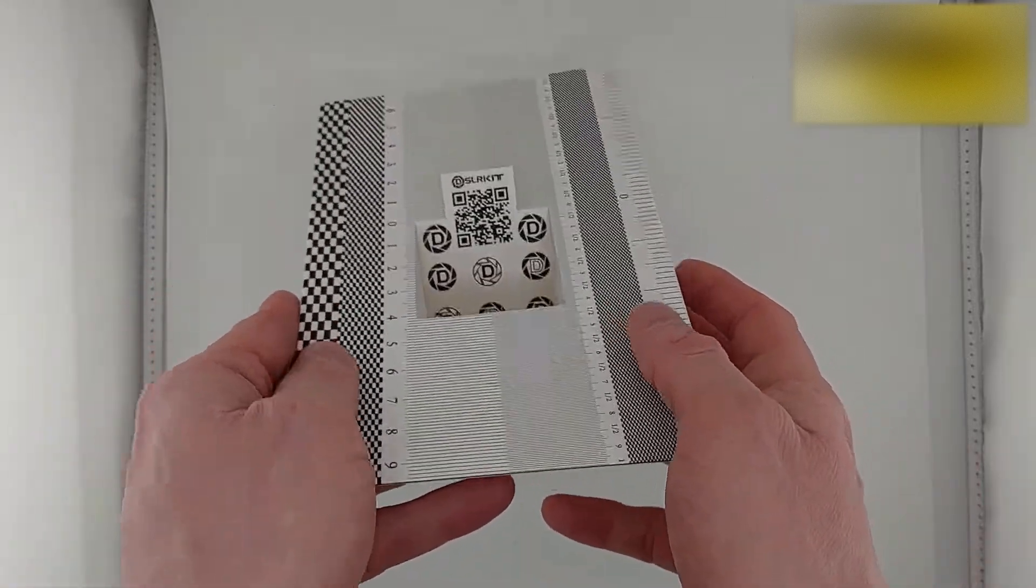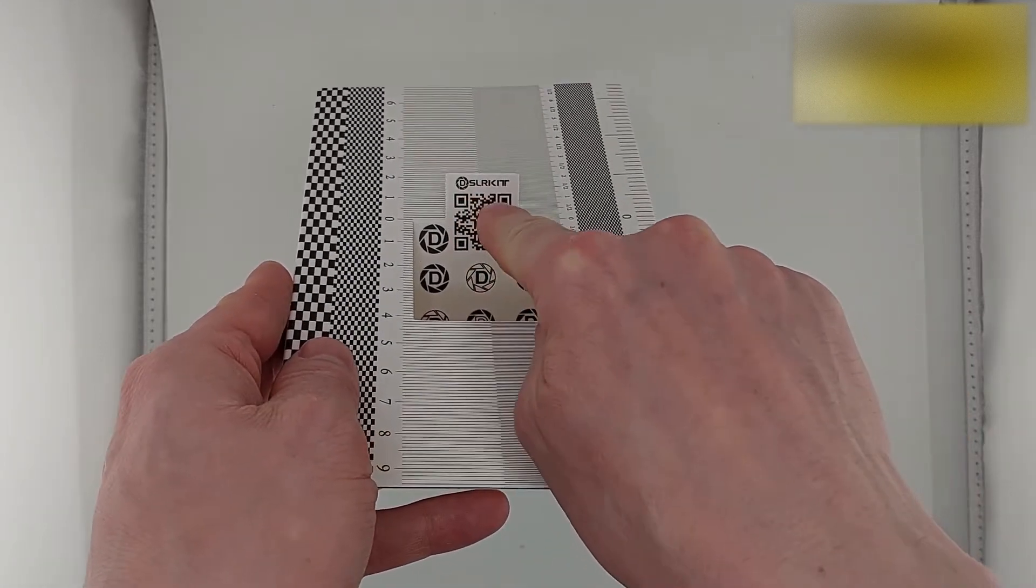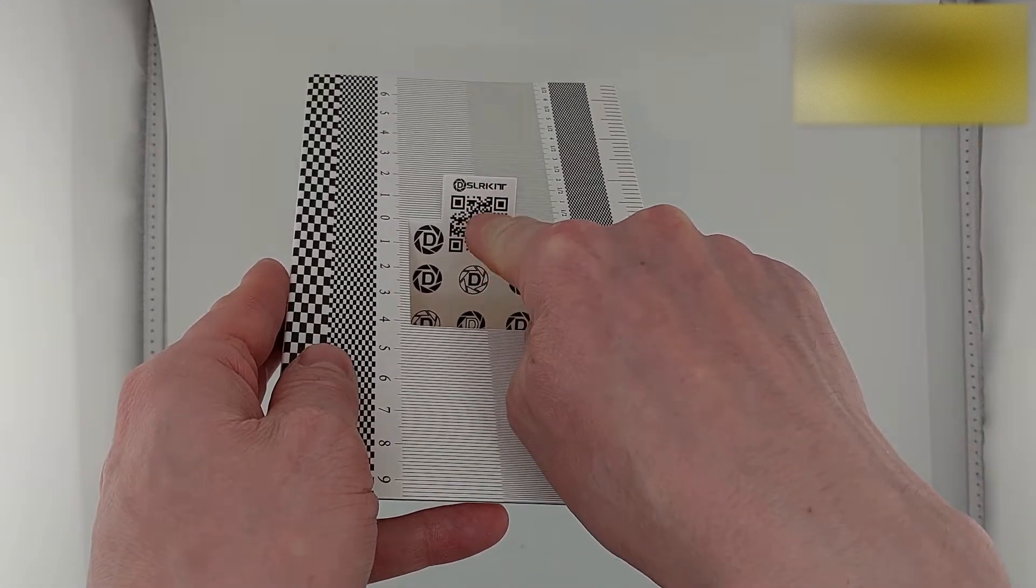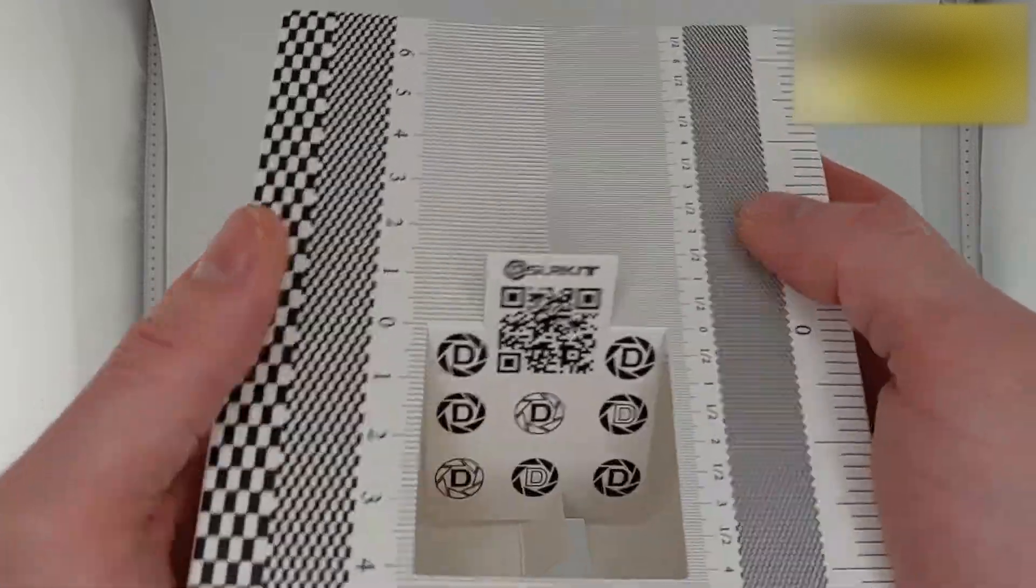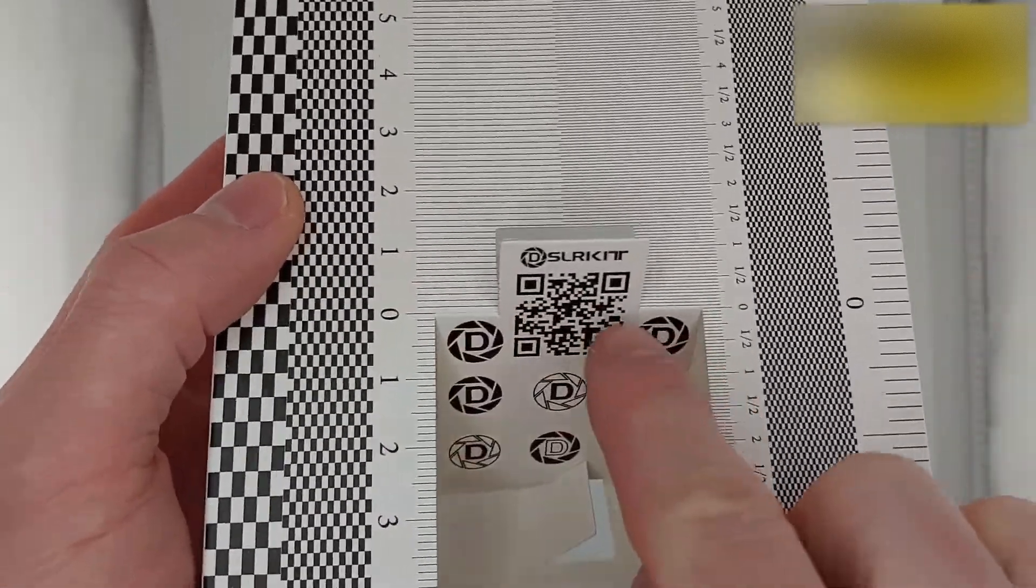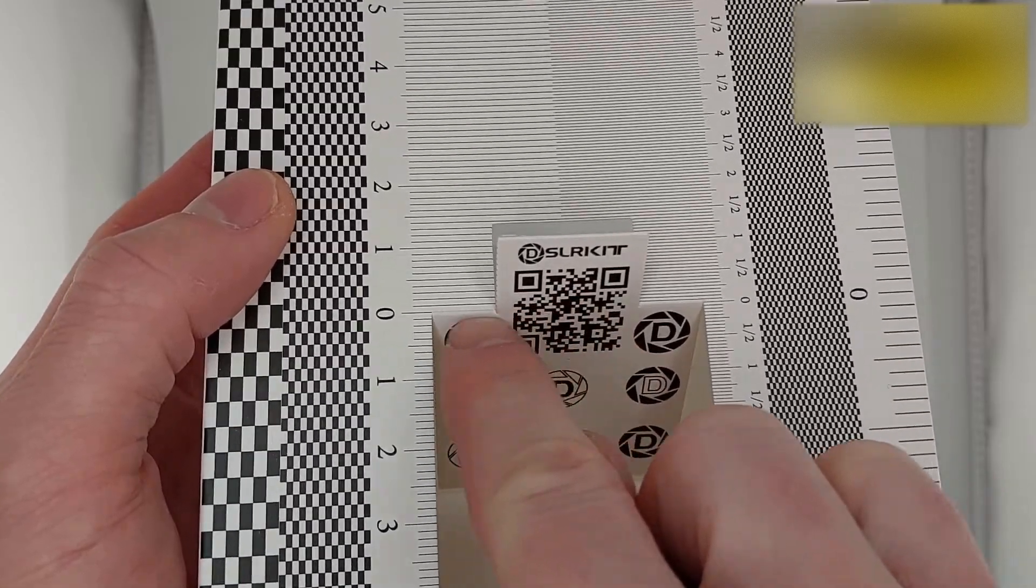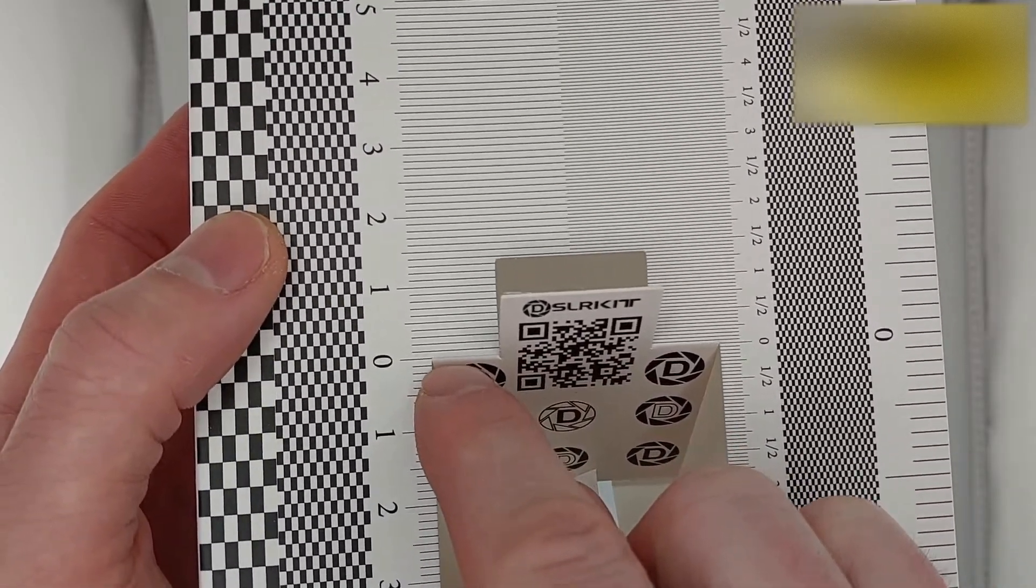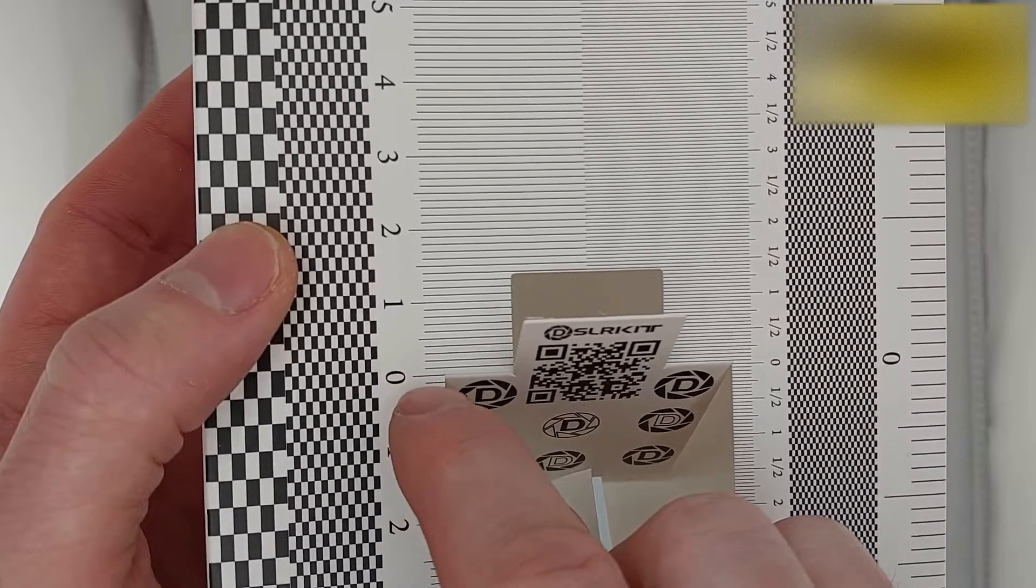When you actually focus the lens, you need to focus on this QR code here. And the reason for that is if I bring the tool closer, is the QR section is directly on focus line with the zero.